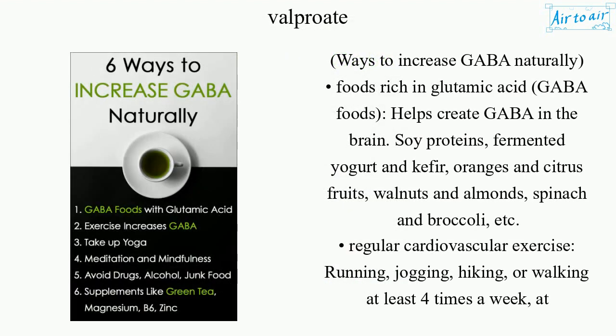Ways to increase GABA naturally: foods rich in glutamic acid — GABA foods — help create GABA in the brain. These include soy proteins, fermented yogurt and kefir, oranges and citrus fruits, walnuts and almonds, spinach and broccoli, etc.